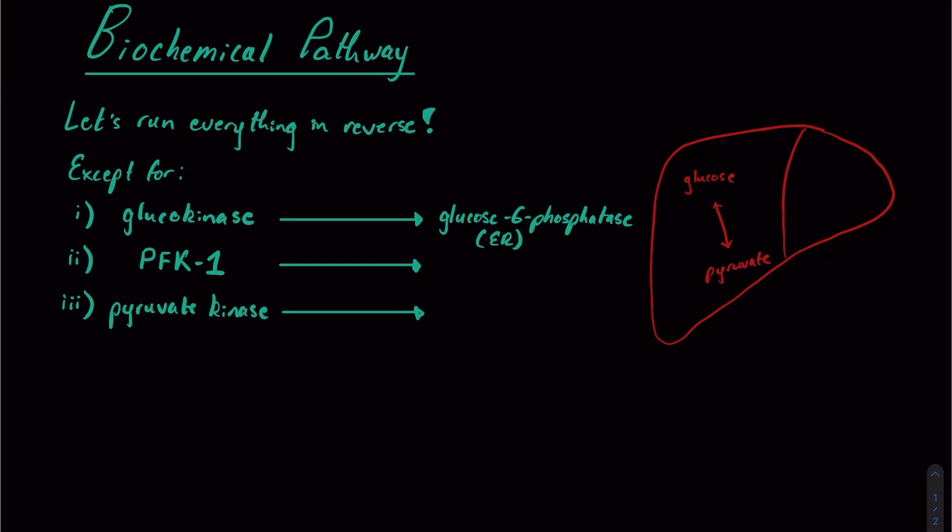And this enzyme, sometimes I like to test this, is found in the endoplasmic reticulum. So we'll just put that there. Generally, it's a pretty specific enzyme to the liver. For PFK1, again, this is a kinase, so we want to take off a phosphate. And that's going to be another phosphatase. So this will be fructose-1,6-bisphosphatase.